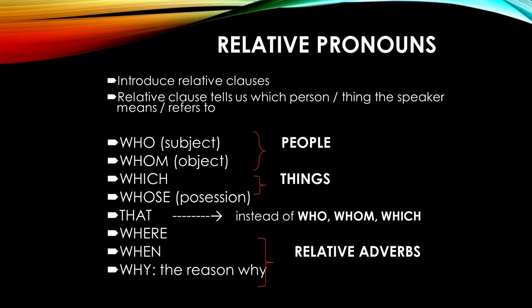Relative pronouns introduce relative clauses. Relative clauses tell us which person or thing the speaker means or refers to. 'Who' is the subject, 'whom' the object — meaning people. 'Which' and 'whose' refer to things. 'That' can be used instead of 'who,' 'whom,' or 'which.' 'Where,' 'when,' and 'why' give the reason why — they are relative adverbs.